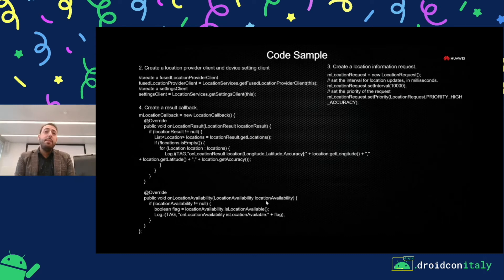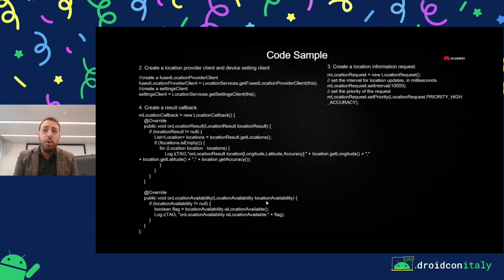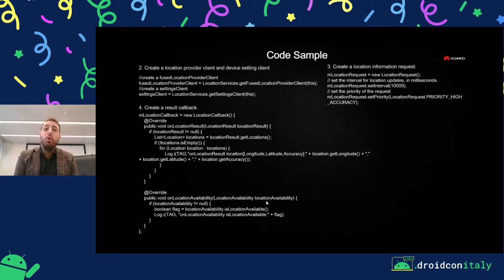About our HMS location kit, you just have to integrate a FusedLocationProviderClient. You can check the settings for this client, add settings, and check if a user has already enabled geolocation. Then you can set the priority for high accuracy or low accuracy, and also the interval for the location request. We also support get last location — if you've already requested and received a location result, you will have a last location, so you get it in a very easy and fast way.